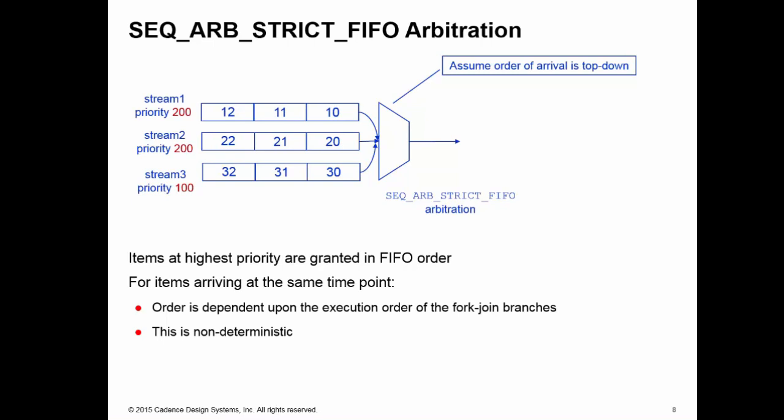There are three items waiting for the sequencer to arbitrate between: 10, 20, and 30. We assume the order of arrival was top-down. So the first item, 10, goes first, and the second item, 20, is being supplied. But stream 1 has generated the next data item, 11, as soon as the 10 was consumed.